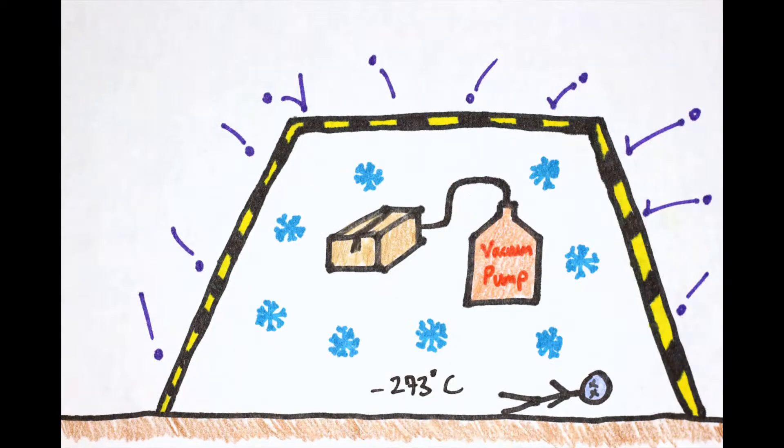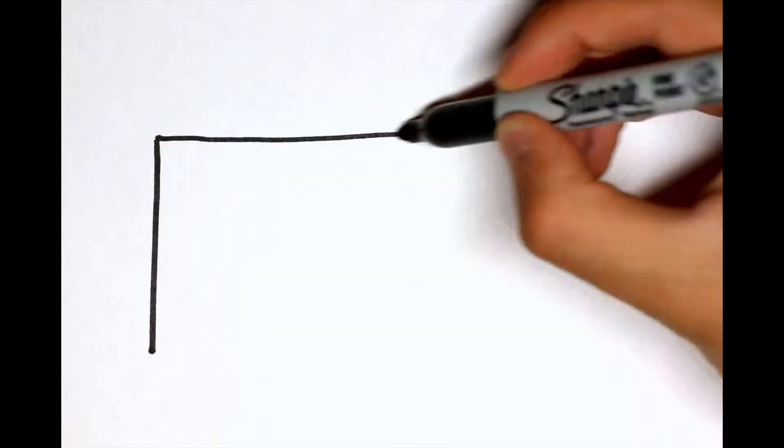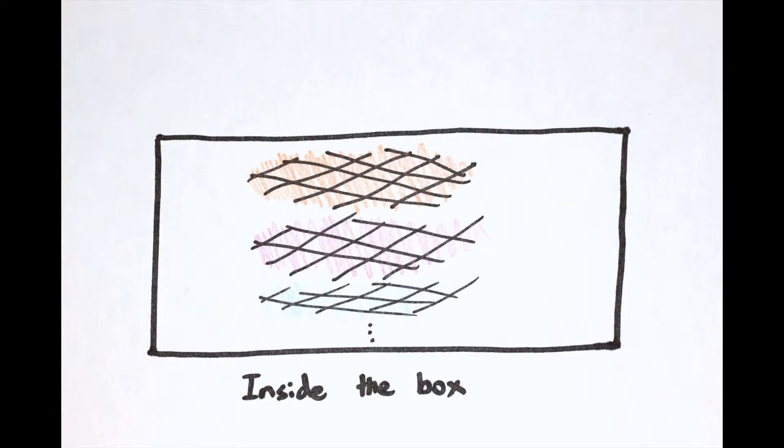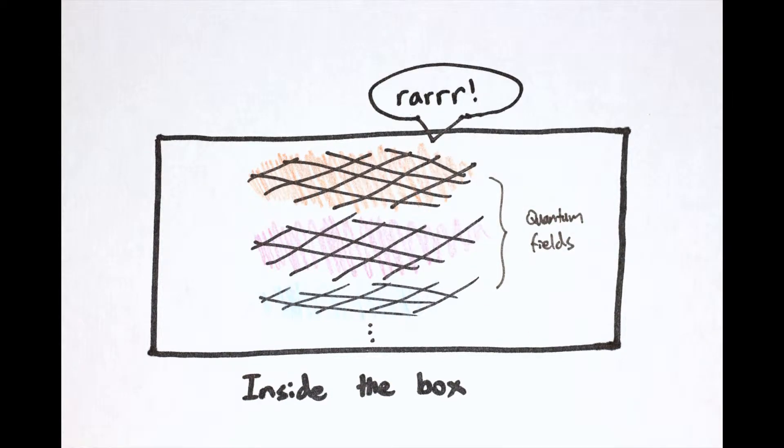Now keeping this in mind, consider the ideal empty box that we created earlier. Even though the box is in a complete vacuum state, the space inside the box is occupied by quantum fields. But it turns out that these quantum fields don't just sit still within the empty box.